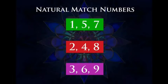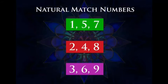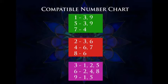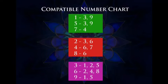On the screen you can see the numbers in three rows: 1, 5, 7 — then 2, 4, 8 — and 3, 6, 9. These are the numbers that quickly, effortlessly, and naturally match with each other. Next, you can see a list of compatible numbers. This list is not serially numbered from 1 to 9; it's numbered in the natural match order — 1, 5, 7, then 2, 4, 8, and 3, 6, 9. In case you have a master number, reduce it to a single digit: 11 becomes 2, 22 becomes 4, and so on.